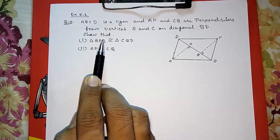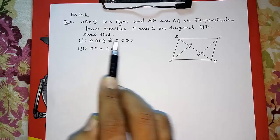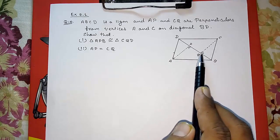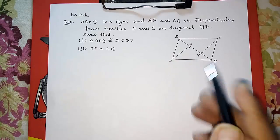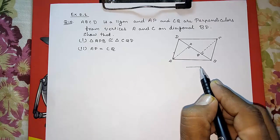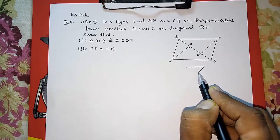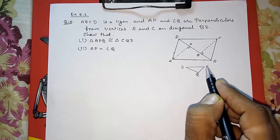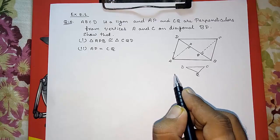Show that triangle APB congruent to triangle CQD - we have to prove these two triangles. I am drawing a rough figure so that you come to know. This will be D, Q, C, and you have to prove this one also.